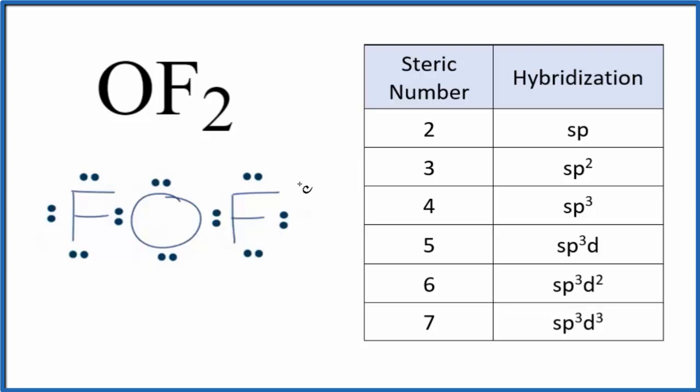In short, we end up with sp3 hybridization for OF2 and here's how we figure that out. We start with a valid Lewis structure. If you need help with that, there's a link at the end of this video.